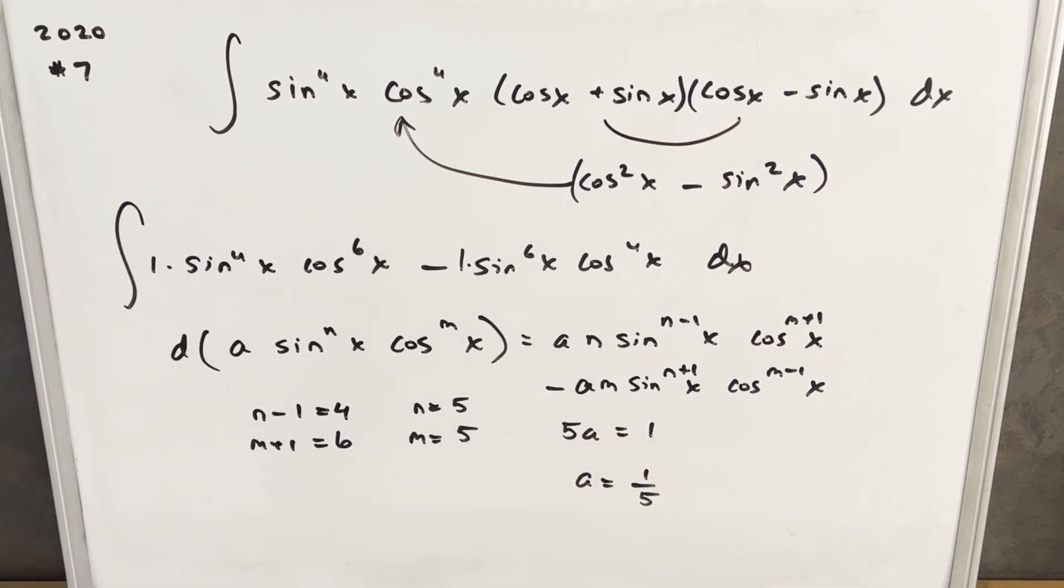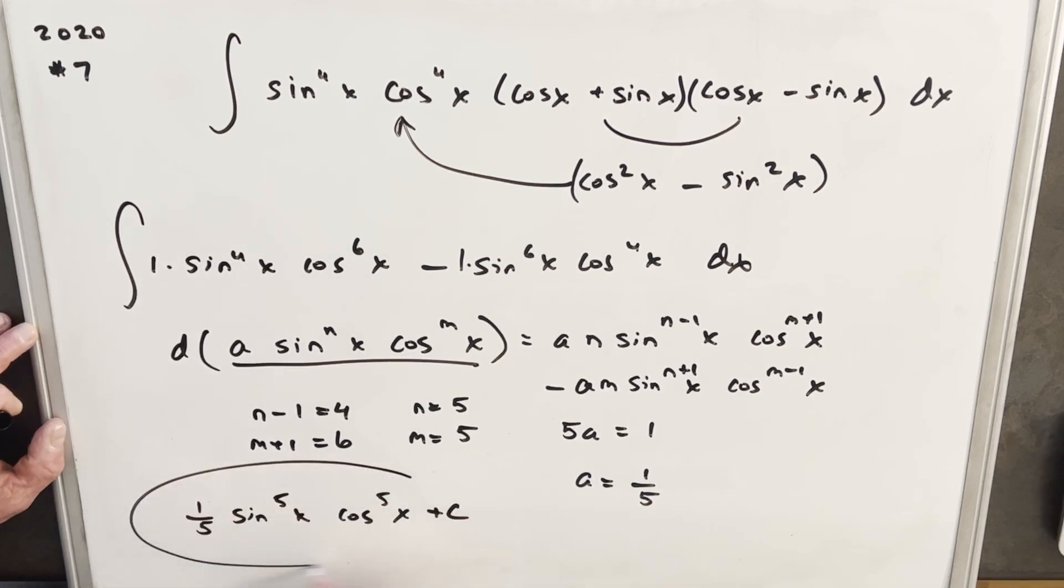And of course, that would work for the other one as well. So putting that all together, we're saying this is going to be our solution. And we have our three values. So that means our answer is going to be 1 fifth sine to the fifth x cos to the fifth x plus c. Okay. And so that was the slow way.